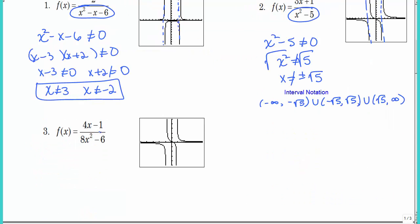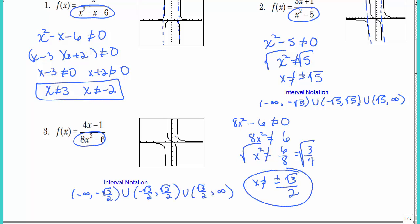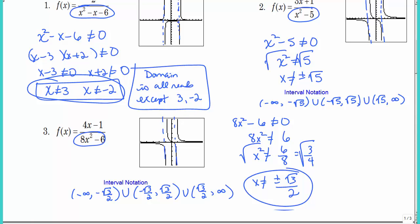The third example is much like the second. Set the denominator not equal to zero, add 6 and divide by 8, reduce, then take the square root — don't forget your plus or minus sign. The graph confirms two vertical asymptotes. In all three examples we had two values excluded from the domain. So: all reals except 3 and negative 2; all reals except plus or minus the square root of 3 over 2; all reals except plus or minus the square root of 5.